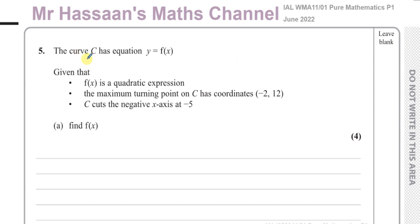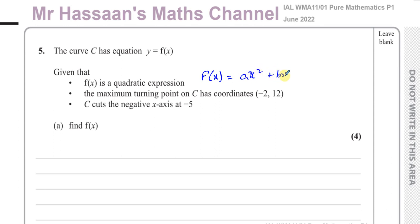This question is about a curve with equation y equals f of x. We're told that f of x is a quadratic expression, so we can say f of x is equal to a times x squared plus b times x plus c — it's got this type of form.